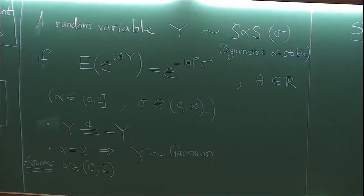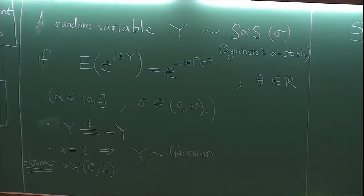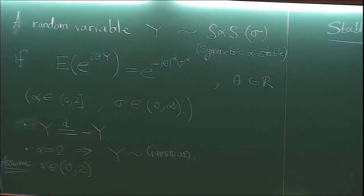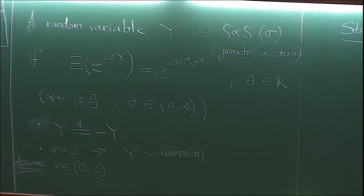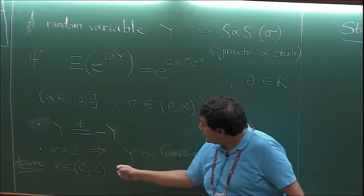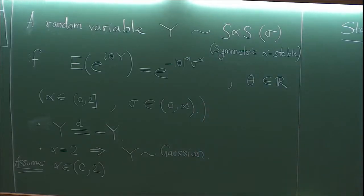So where do these random variables arise? We all know the central limit theorem: when you have a symmetric random variable with finite variance, if you take the sum of n IID copies and divide by square root of n, that converges to normal. But suppose you don't have finite variance — just that the random variables are symmetric. With some extra conditions, one can show that the scaling limit, if it exists, has to be one of these SαS random variables. So these random variables are important because they are obtained as scaling limits of sums of IID random variables. If alpha is 2, you get the finite-variance case; otherwise you get the other alphas.